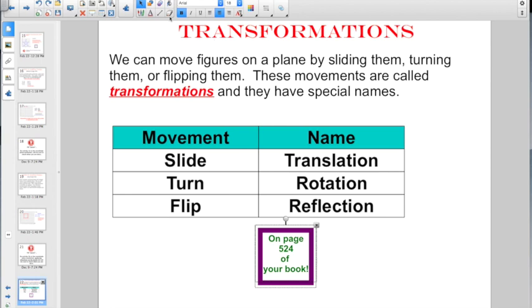All right, welcome back. We're moving away from coordinate planes into something new called transformations. This is all on page 524 of your book. We can move figures on a plane by sliding them, turning them, or flipping them. These movements are called transformations and they have special names. They're going to show up every day for at least a month. You want to always go back and double check these names. If I slide a figure across a coordinate plane, the technical name is not slide, it's translation. If I turn it, that's called a rotation. Or if I flip it, it's a reflection.